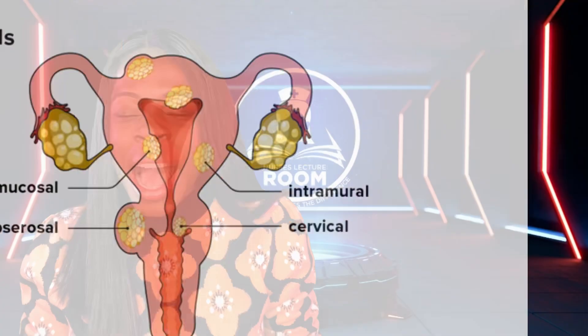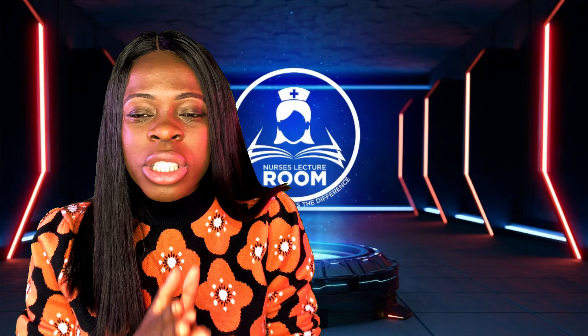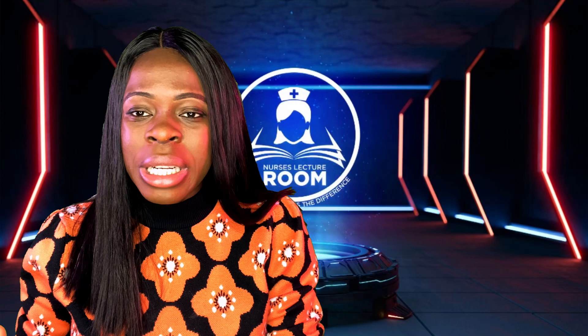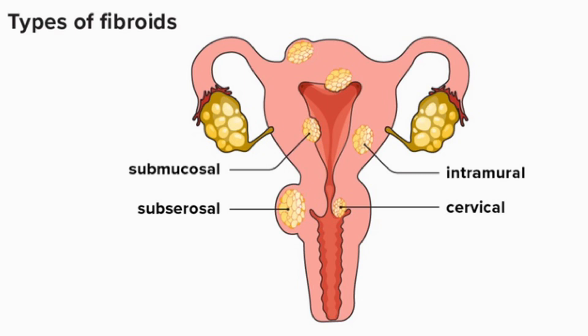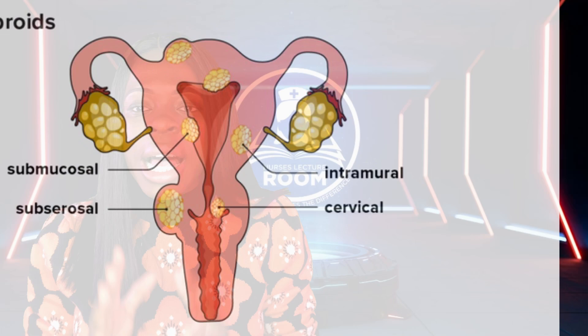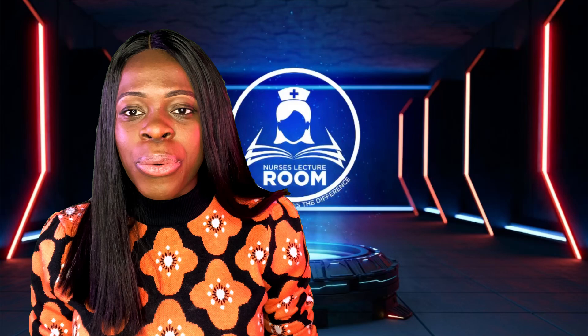The sub-serosal fibroid is located outside the womb, outside the uterus. Sub-serosal fibroids can enlarge, grow big, and extend into the pelvic region. The submucosal fibroid develops in the muscular layer beneath the uterine lining, and these can enlarge and go into the cavity of the uterus. So we have the intramural, the sub-serosal, and the submucosal fibroid.